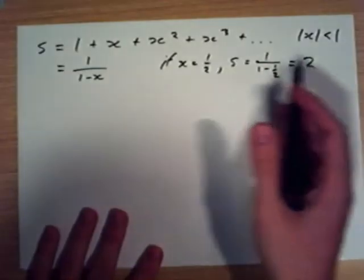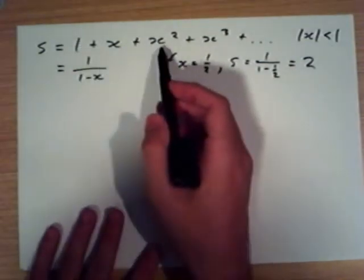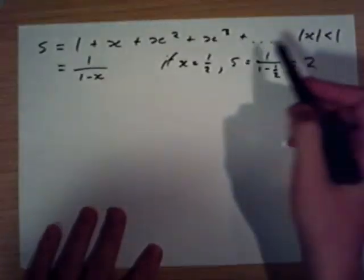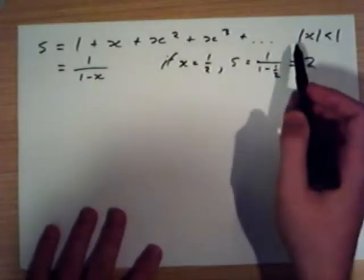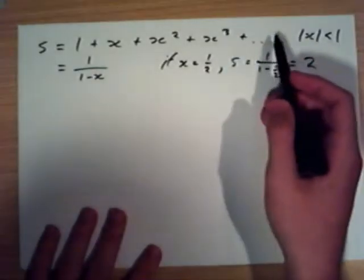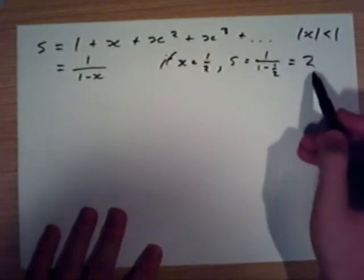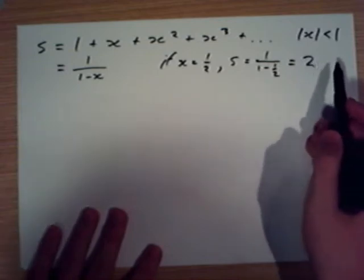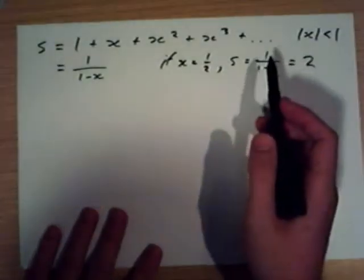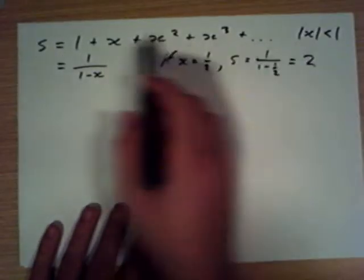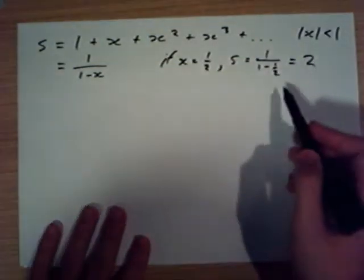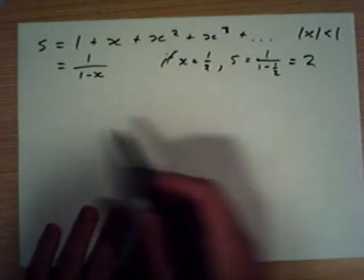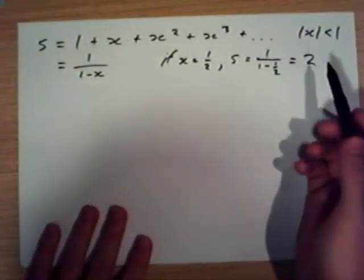So you can try it on your calculator. Add 1 plus 1 half plus 1 quarter plus 1 eighth plus 1 sixteenth, and keep on doubling the denominator and keep on adding them up together. And you'll see that it really rapidly converges to 2, and it never goes higher than 2. You can check it as long as you want. You can write a piece of software which will add millions and millions of them together. It will never go more than 2, and actually it will go to 2 really rapidly. It has a high rate of convergence.